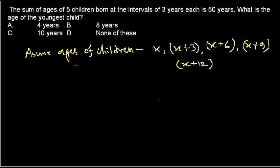They've told us that the sum of all of these ages is 50 years. Now you can see how easy this problem really is. Simply x plus x plus 3 plus x plus 6 plus x plus 9 plus x plus 12.